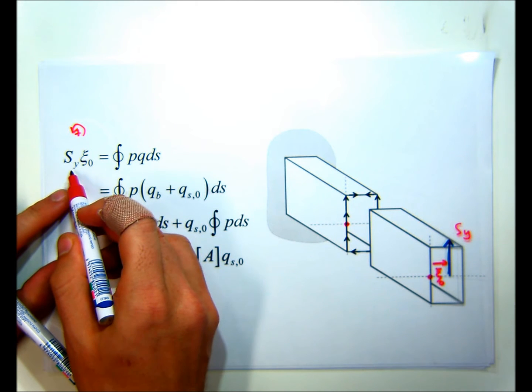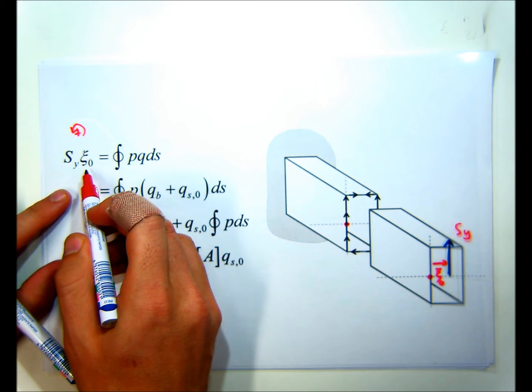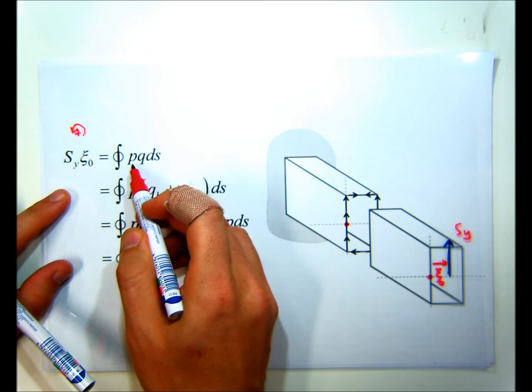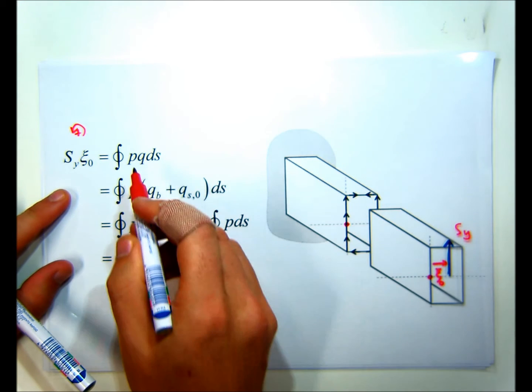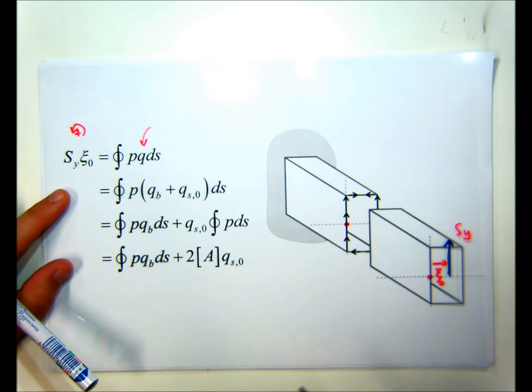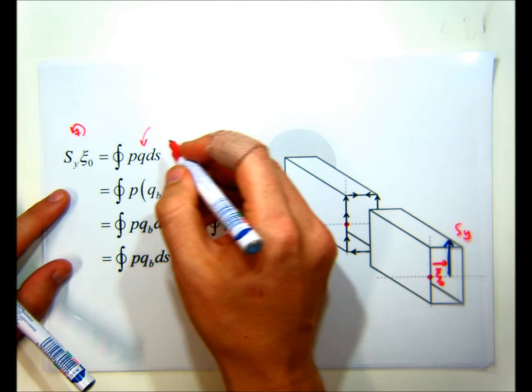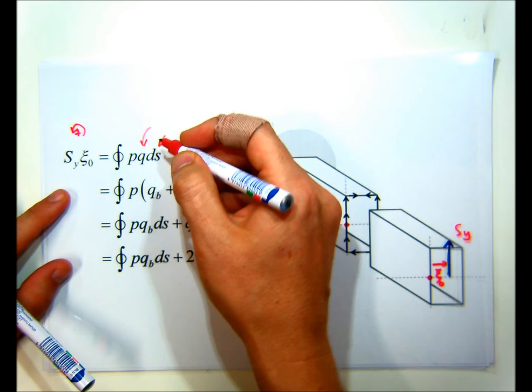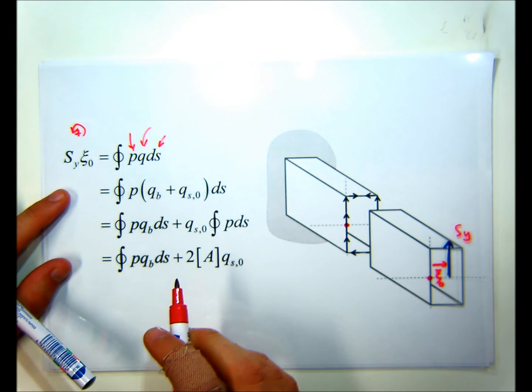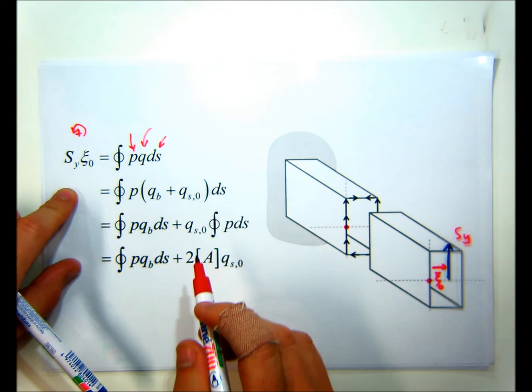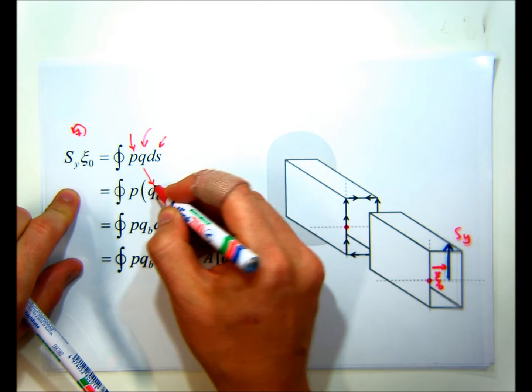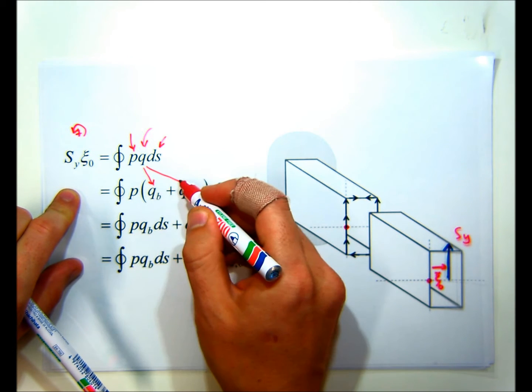The external moments are shear force times the distance, and the internal moments are the integral around the loop of PQDS, where Q is our total shear flow that we're trying to calculate. We can break the Q into two parts, as we did on the previous slide, and we can break it into QB and QS0.